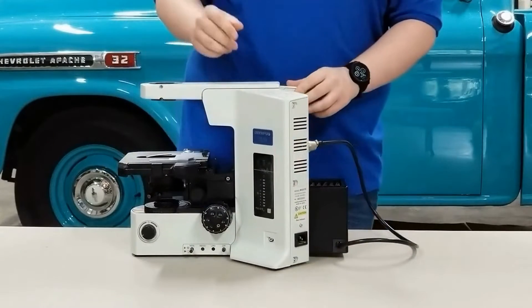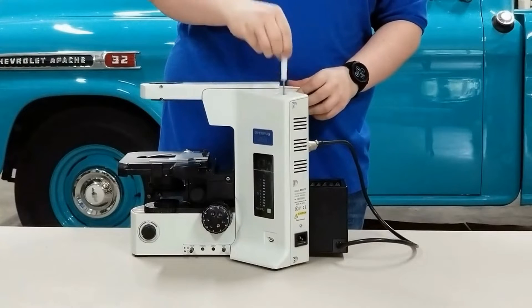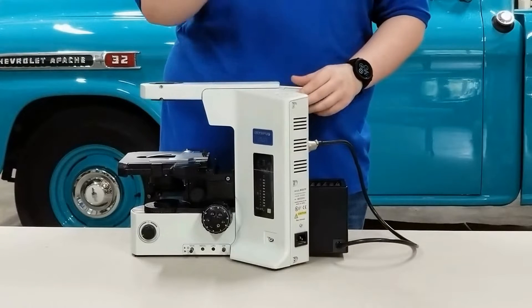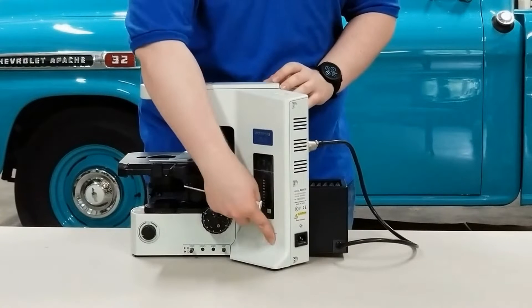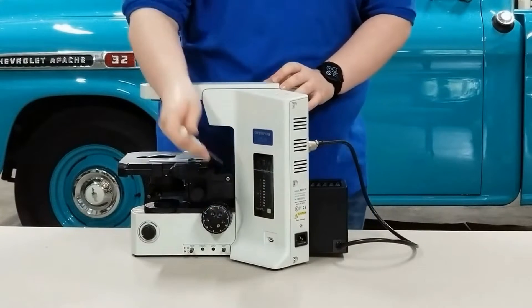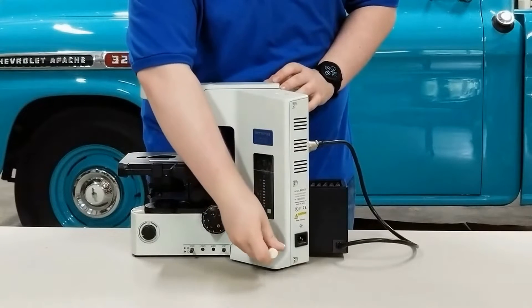First, get the three millimeter wrench from the upper right hand side of your microscope and insert it into the hole I'm pointing out here. Give it a few turns to loosen the screw and that should help remove your lamp house.